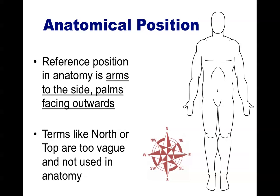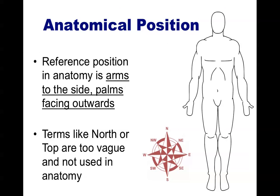However, these descriptions are not made with words like north, or top, or left, or right. They're a little too vague and they're just not conventionally used in anatomy. Instead, this is the set of directional vocabulary that we're going to go over. Most of these terms come in pairs, just the same way that you could have top and bottom, or north and south.